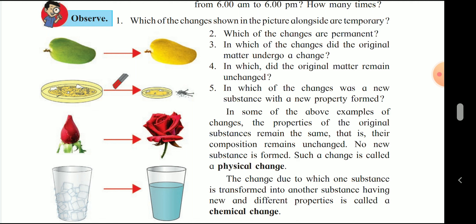In some of the above examples of changes, the properties of the original substance remain the same — that is, their composition remains unchanged and no new substance is formed. Such a change is called a physical change. The change in which a substance transforms into another substance having new and different properties is called a chemical change.